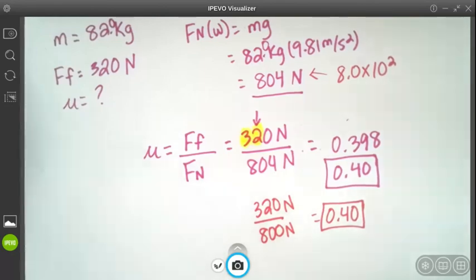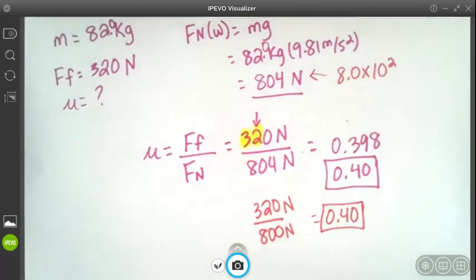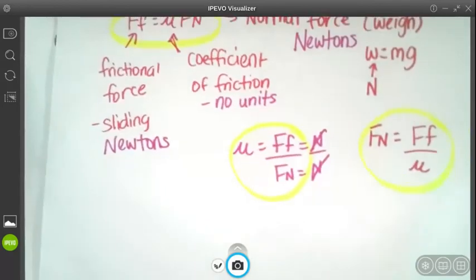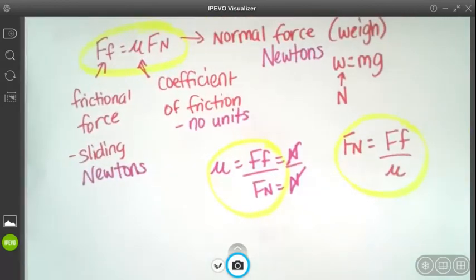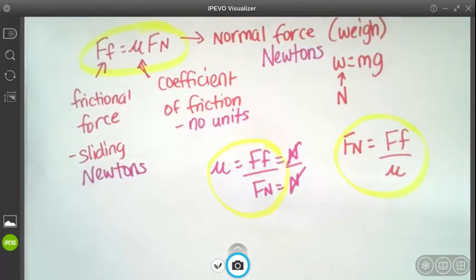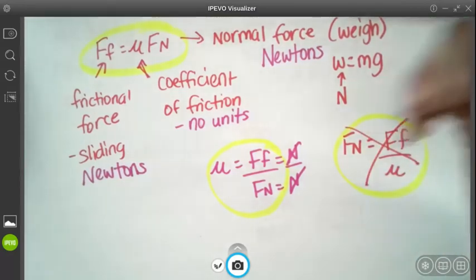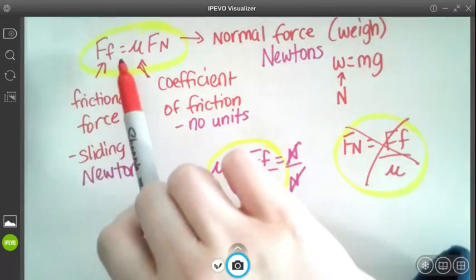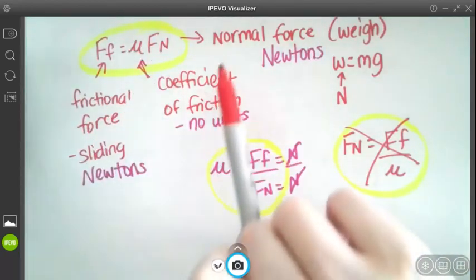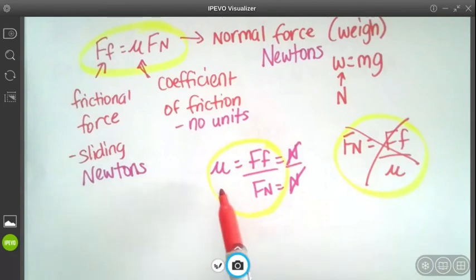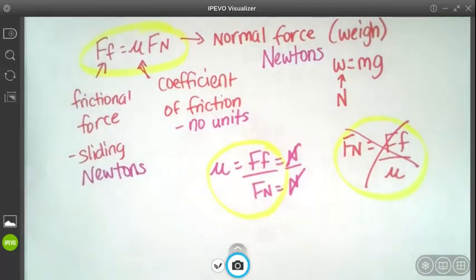So again just to remind you, here are the equations. Usually not going to do this but you might, if you do there you have it. So frictional force equals mu times normal force, and then your coefficient of friction mu equals Ff over Fn. So those are two equations that you will have to work with or three equations that you might run into.